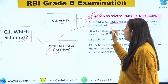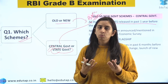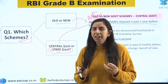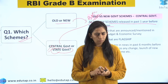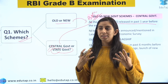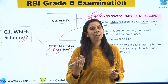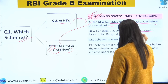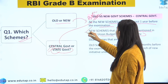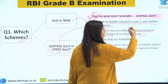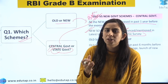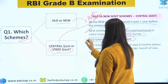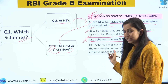All new schemes released in the past one year before your examination you must cover, because by virtue of being in current news, they are more important. Usually there are times when Parliament is in session or some important issue is ongoing — that's when schemes are released. Also, new schemes that are announced or mentioned in the Budget and Economic Survey you will cover. It's important to note 'announced or mentioned' — some are announced in the Budget itself while some find mention in the survey.